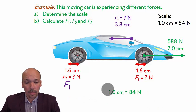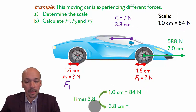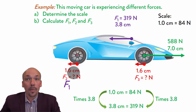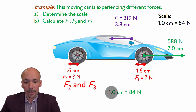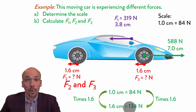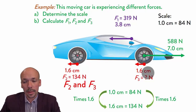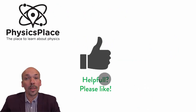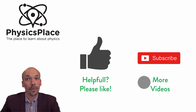F1 is the air resistance at 3.8 centimeters. Since 1 centimeter equals 84 newtons, we multiply by 3.8, giving 319 newtons. For F2 and F3, they are both 1.6 centimeters. Multiplying 84 newtons by 1.6, we get 134 newtons each. So F1 is 319 newtons, F2 is 134 newtons, and F3 is 134 newtons. I hope you found this video helpful — if so, please like so I know I helped you, and don't forget to subscribe for more videos. Thanks for watching.